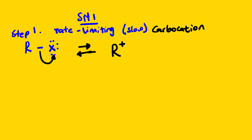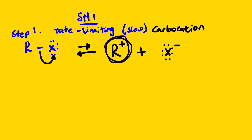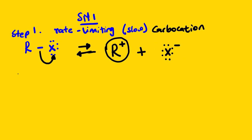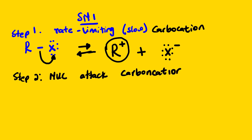When the leaving group departs, R becomes positively charged because the bonding pair of electrons leaves with the leaving group, giving it a negative charge. We call this positively charged R a carbocation. This process — the rate-limiting step — must occur before the nucleophile can attack; we need to form the carbocation first. This gives us our leaving group and our carbocation. Step number two is where the nucleophile attacks the carbocation. Carbocation simply means a carbon with a positive charge.